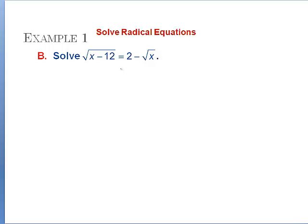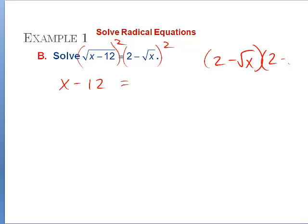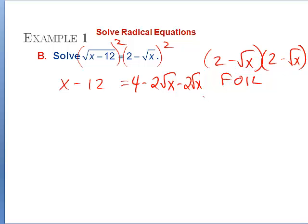Here, again, we want to isolate the radical, but we have a problem because there's a radical on both sides. There is a radical already isolated on the left-hand side, so we start by squaring both sides. On the left-hand side, we're left with x − 12. On the right-hand side, this is a binomial times a binomial, so we need to FOIL: 2 × 2 gives 4; the inner term is −2√x; the outer term is −2√x; and the last term is positive, since negative times negative, and a square root times a square root is just x.